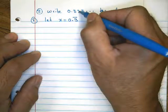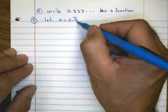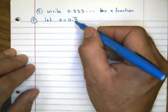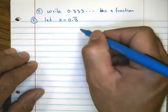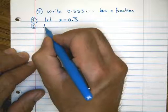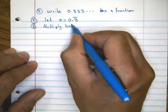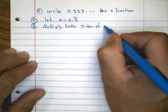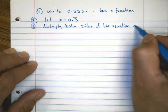We know that 0.333... and 0.3 bar notation are the same thing — we write it in bar notation instead of writing all the numbers because it's easier. Since there's only one digit repeating — 3 is the only digit repeating — I am going to multiply both sides of the equation by 10.